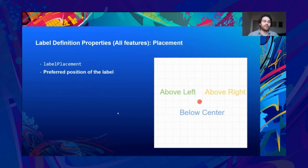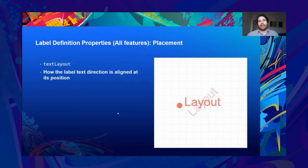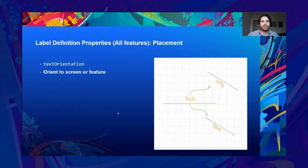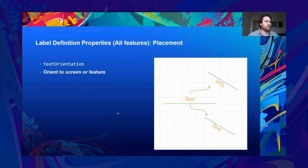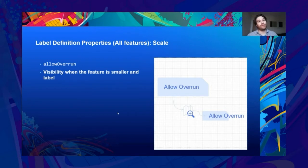Label placement properties: the preferred position of the label around its feature. If deconfliction is set to dynamic, the label may move from this preferred position. Text layout: how the text is aligned at its position — ideally use this in conjunction with the symbol properties. Text orientation: does the text stay upright relative to its feature or to the screen? Consider this when rotating the map or if you want text to always be on a specific side of the feature. Allow overrun: if the label cannot fit within the feature, we can still present the label if we set this to true.